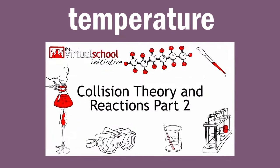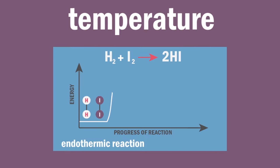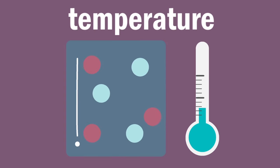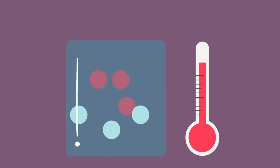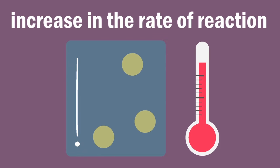Next up is temperature. As mentioned in the video Collision Theory and Reactions Part 2, particles need a certain amount of energy, called activation energy, for their collisions to be fruitful — in other words, for them to react. Increasing the temperature increases the average kinetic energy of the particles. This means that more of them will have sufficient energy to react, resulting in more fruitful collisions per second and therefore an increase in the rate of reaction.